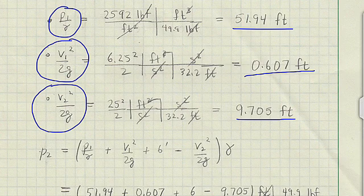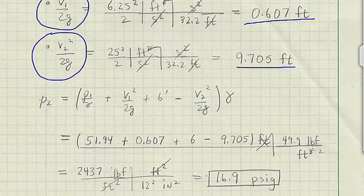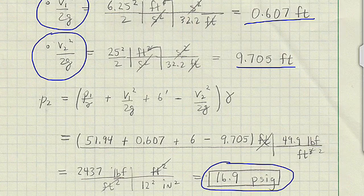Here's the equation for the pressure at 2. When I put in all the values, carry and cancel units, the pressure at section 2 is 16.9 PSI g.